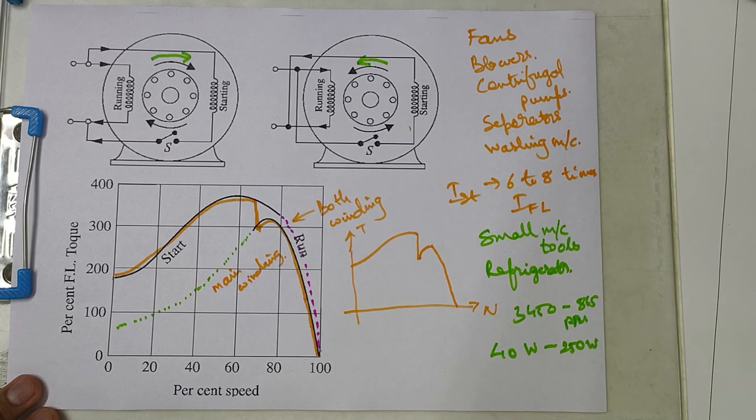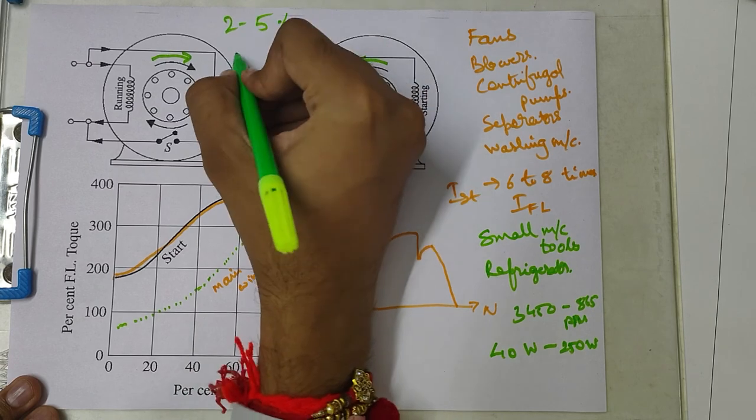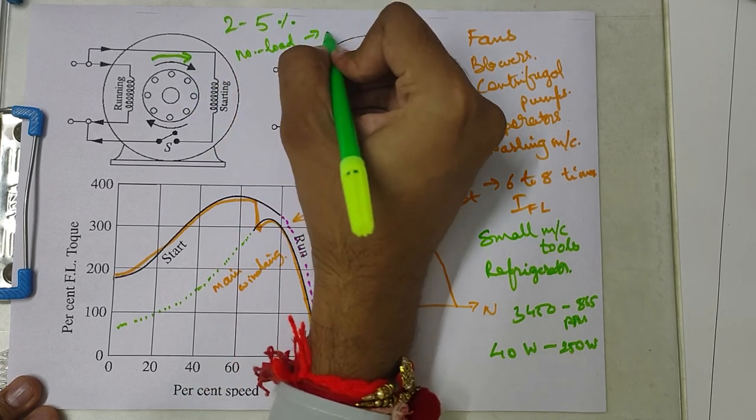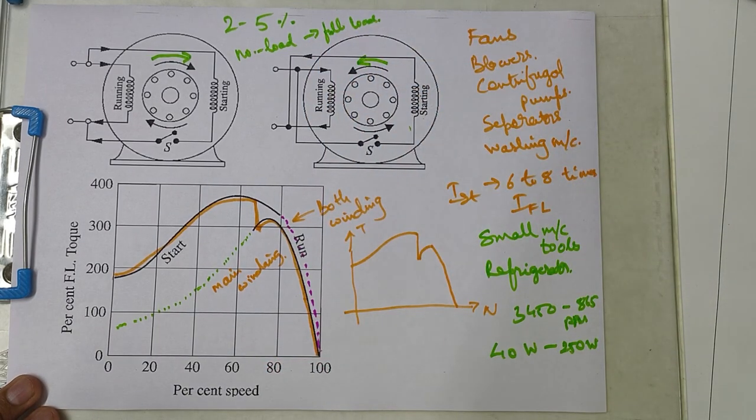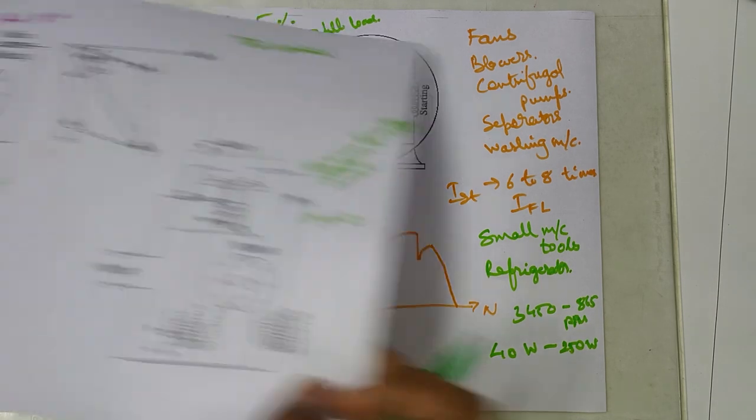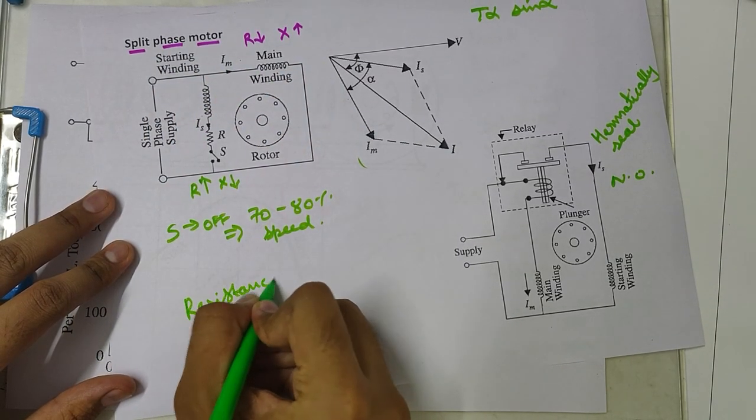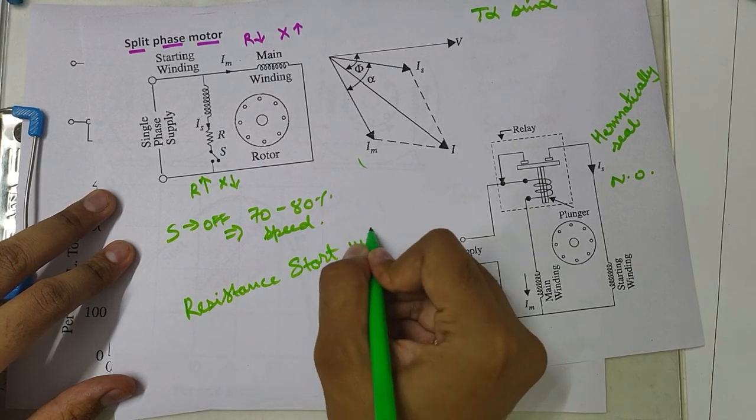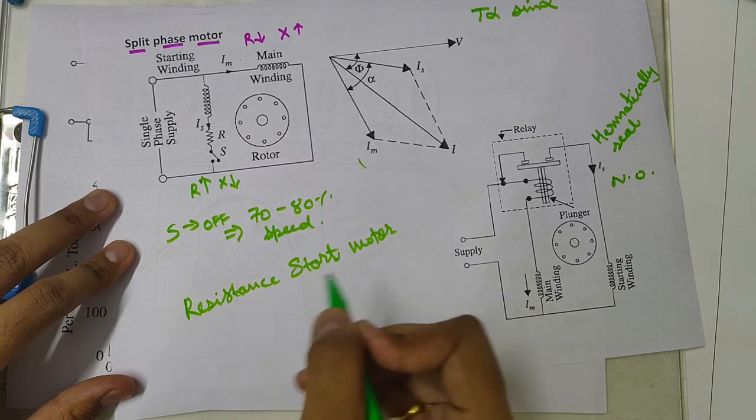These motors are having speed regulation very same as three phase motors. Their speed only varies about 2 to 5 percentage between no load to full load, which is similar like three phase induction motor. And for this reason, such motors are also referred to as split phase motors and also as resistance start motor, just to differentiate with the other term which is known as capacitor start motor.